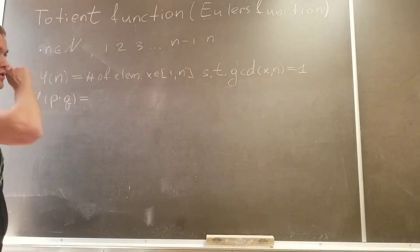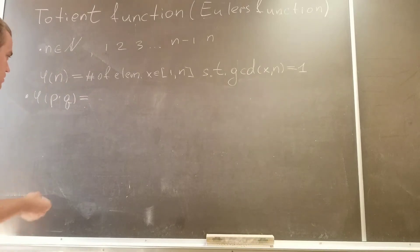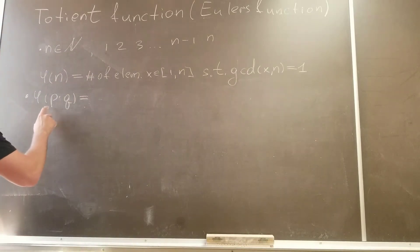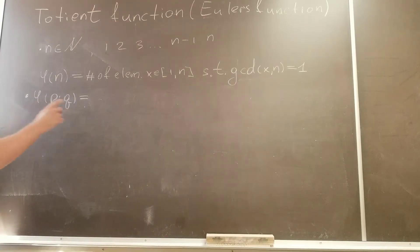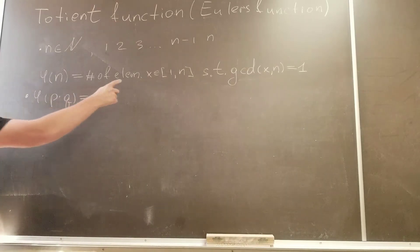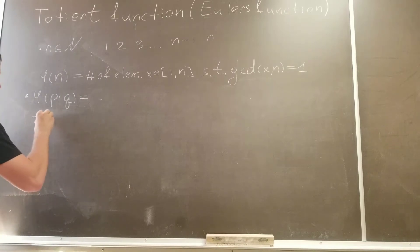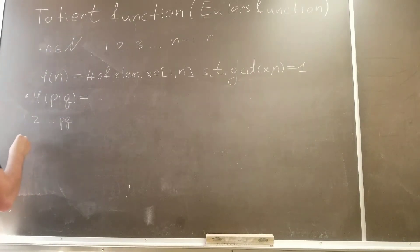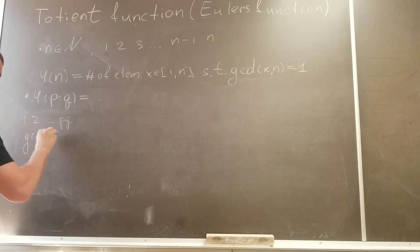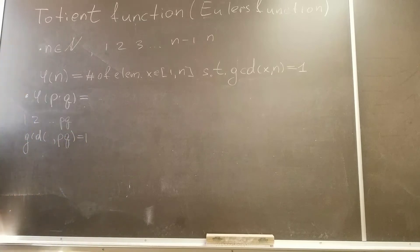In this video I want to continue finding the Euler function for different inputs. So let's find the Euler function of two prime numbers. The Euler function is the number of elements on the interval between 1 and p times q, such that the element from this interval has gcd with p times q equal to 1.